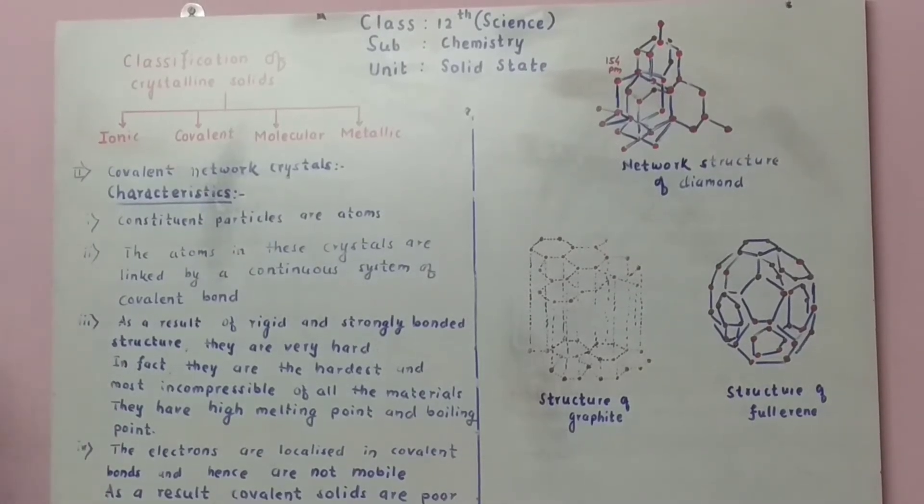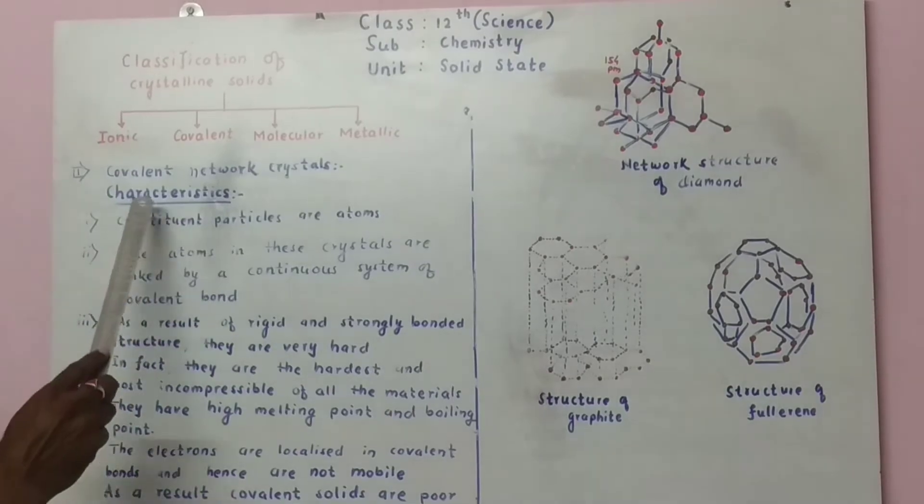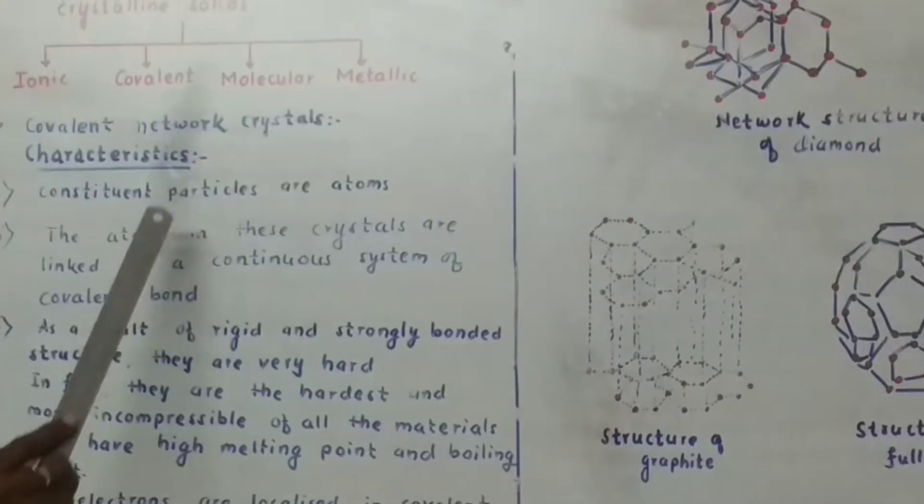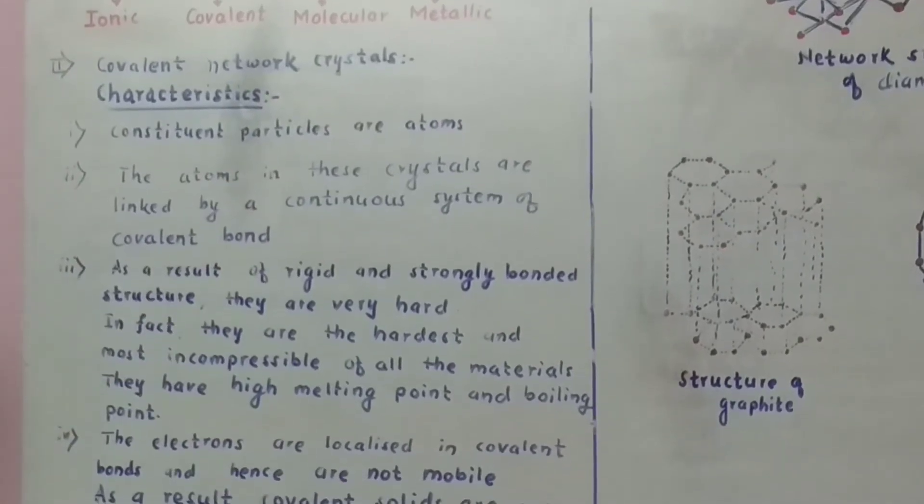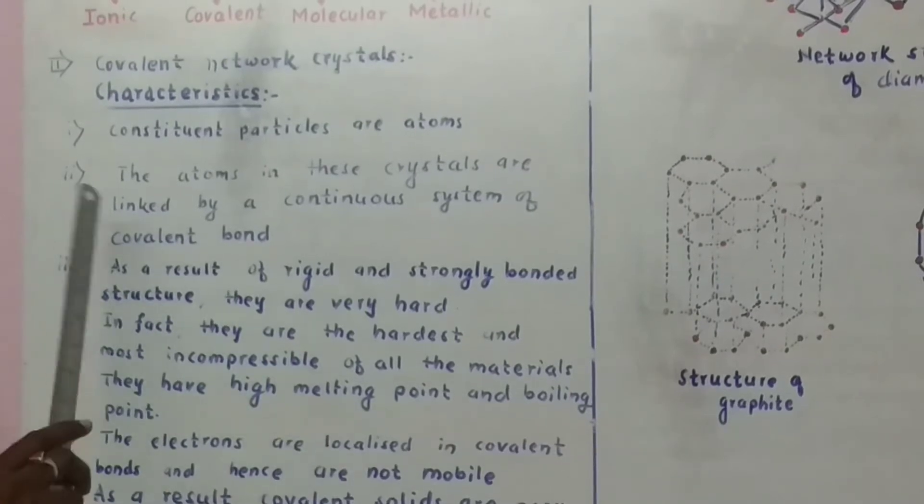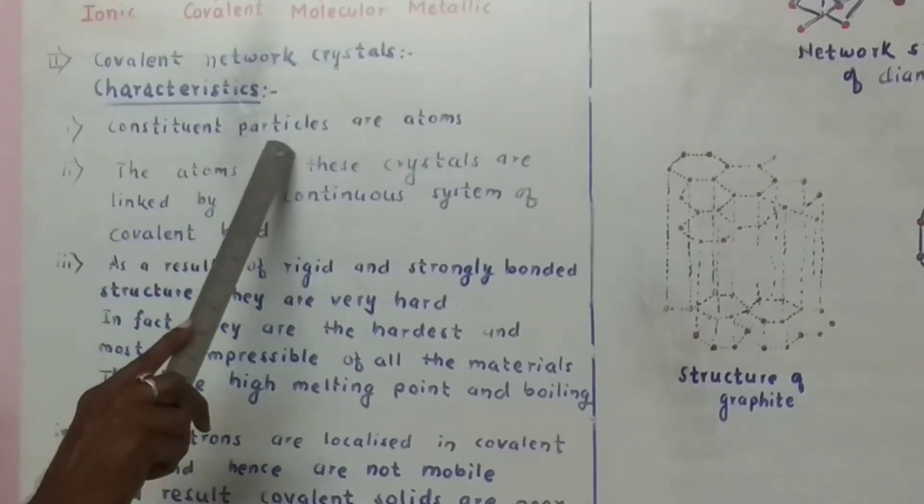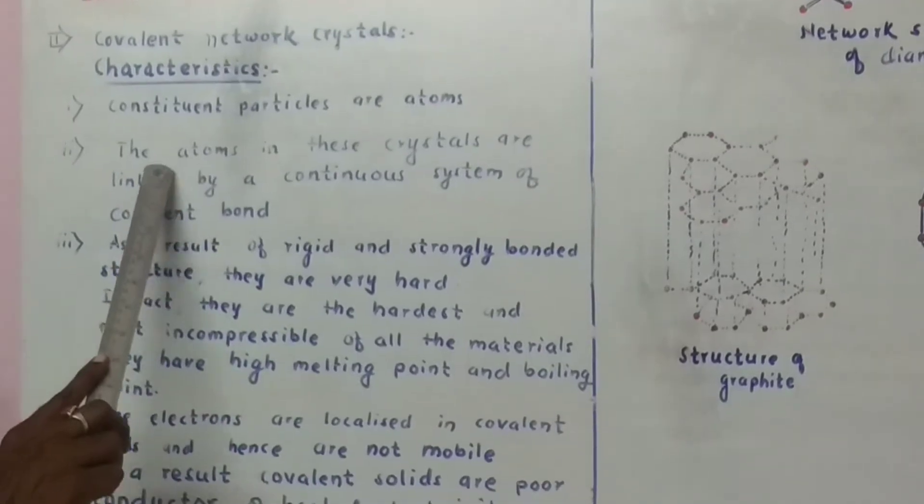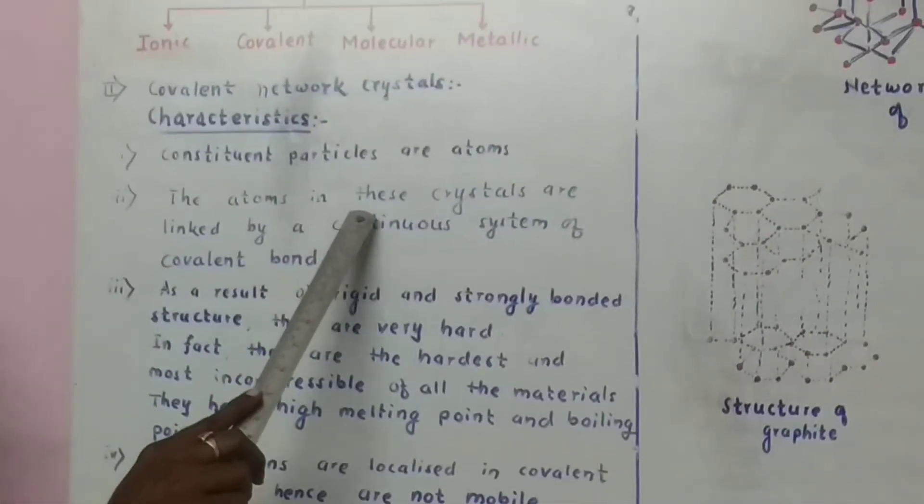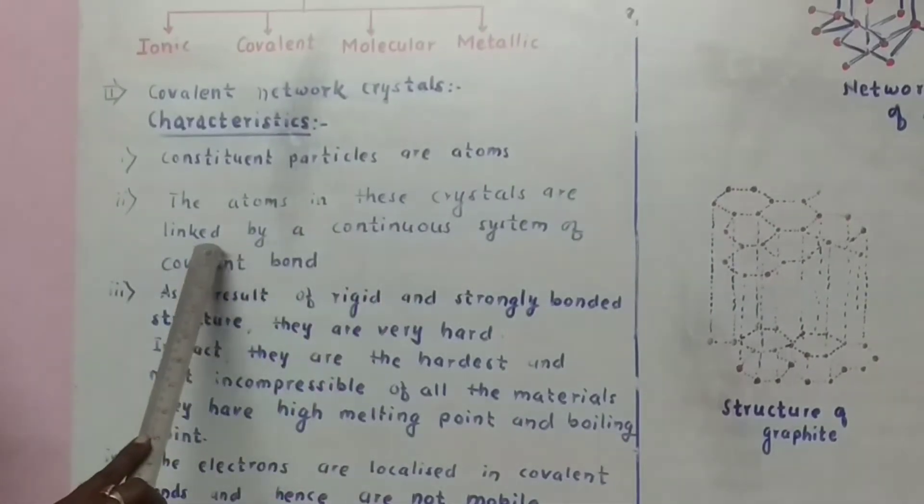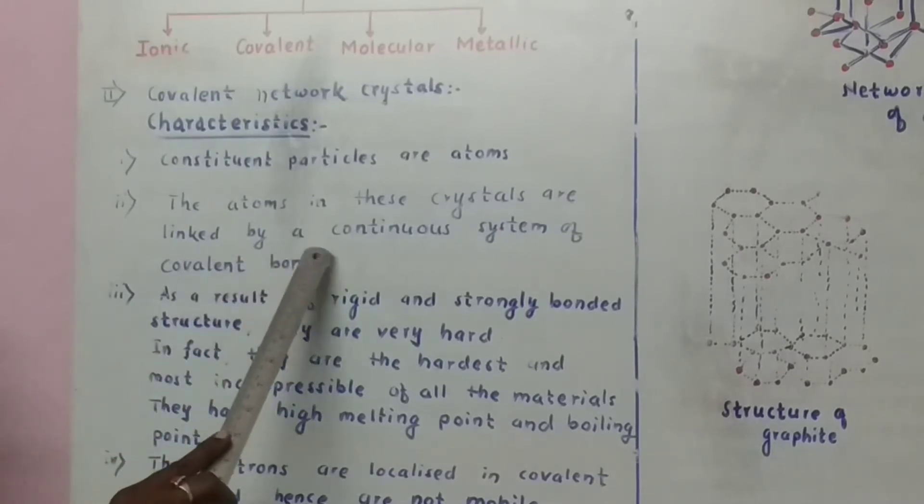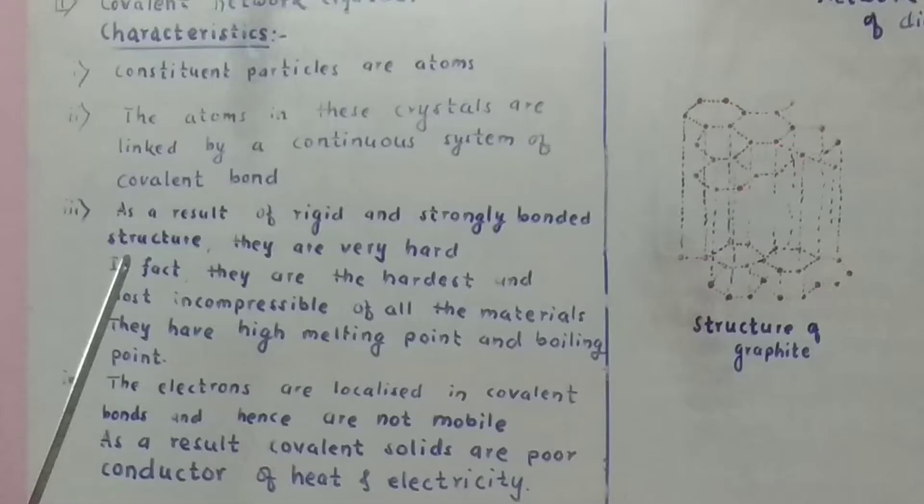So here are some characteristics of covalent network crystals. The constituent particles are atoms. The atoms in these crystals are linked by a continuous system of covalent bond.